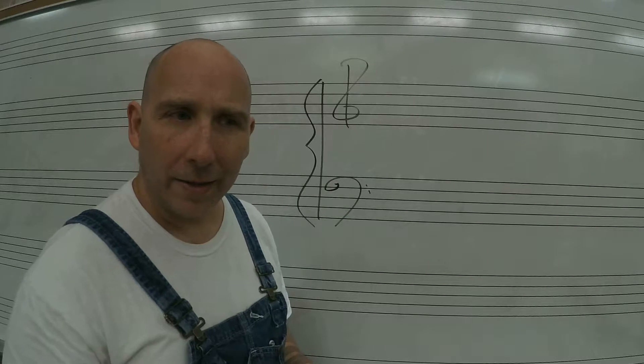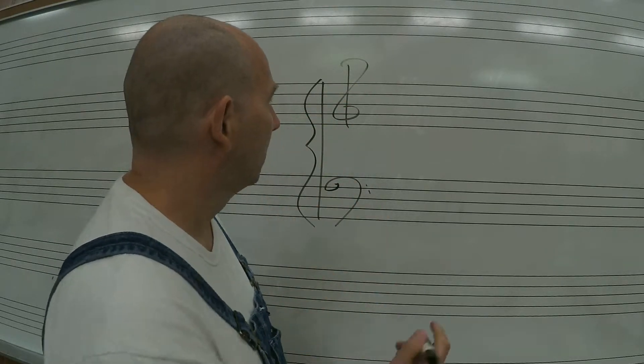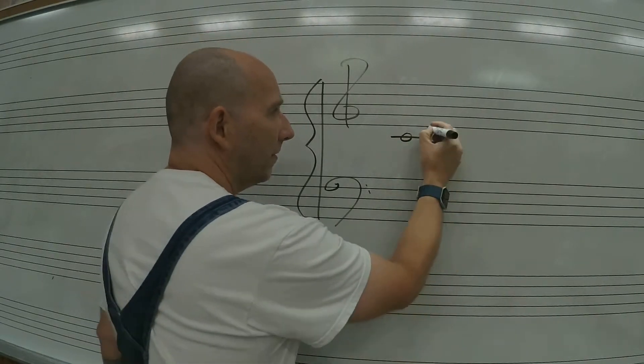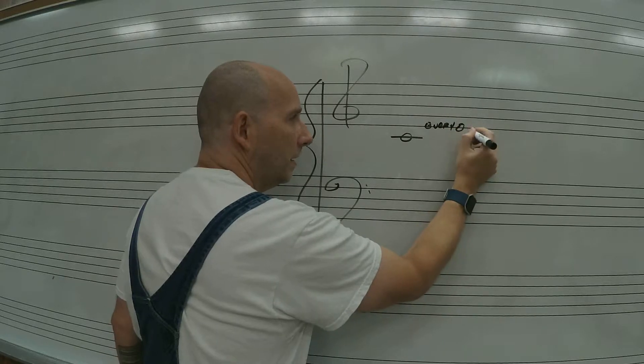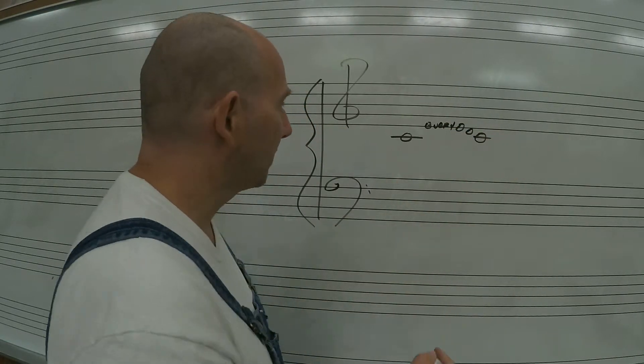The only odd thing about this, other than the fact that we're stacking two of them together, is that this C - because we have Every here, so there's E, D, C - one ledger line below the treble clef is a C.